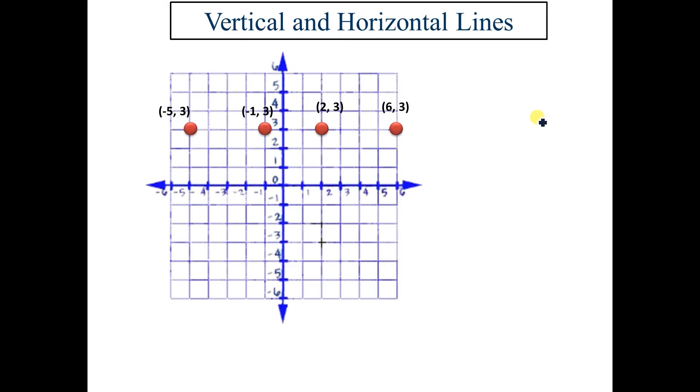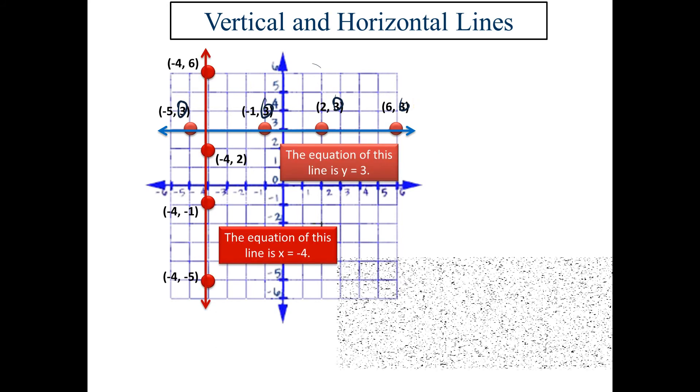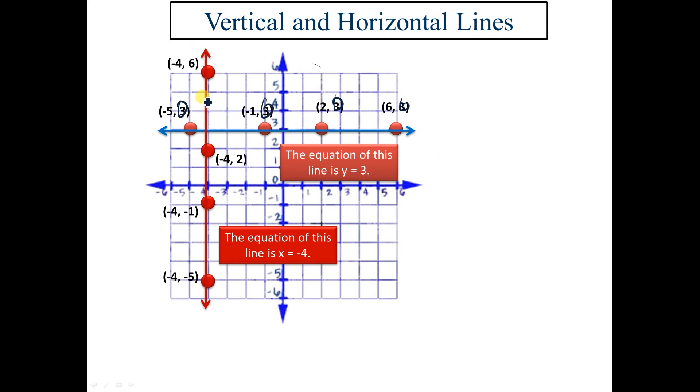Last thing. Vertical and horizontal lines. Now, if I look at this line right here, all of the points on this line, all of the y-coordinates are 3. Every y-coordinate is 3. So it turns out the equation of this line is y equals 3. Now let's take a look at an equation where x equals a number. So if I look at this red vertical line here, for all of the coordinates, x equals negative 4. Since x equals negative 4 for all the points, the actual equation for this line is x equals negative 4.